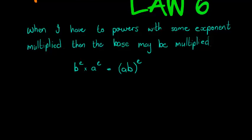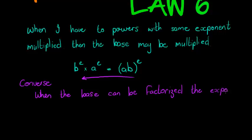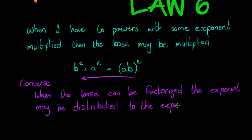The alternative, or actually the converse, of this is also true — and even more important. The converse means we are looking at it from the other direction: in other words, when the base can be factorized. So I've got a base and my base can break up into the product of at least two values, each one not equal to one. When the base can be factorized, the exponent may be distributed to the exponents of each factor.